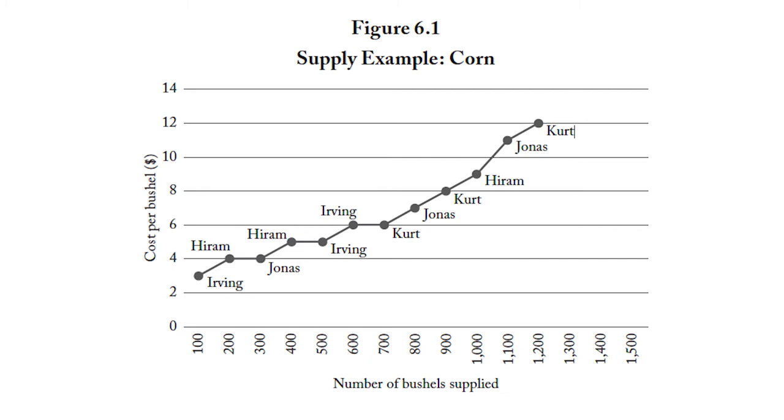If we start with the bushels, what does the supply curve tell us about each additional bushel? For example, going up from the seven hundredth bushel, we reach the $6 mark — that seven hundredth bushel costs $6 to produce. So a supply curve gives us two kinds of information: at any price, it gives us the quantity supplied; for any quantity, it gives us its cost of production. And that's what we mean by supply.